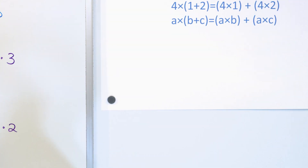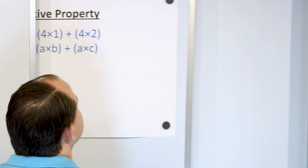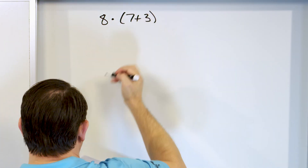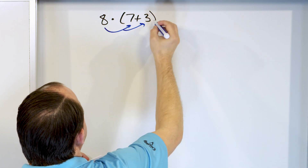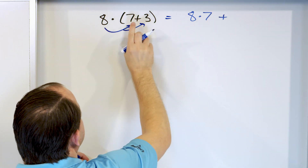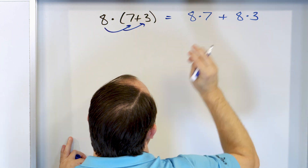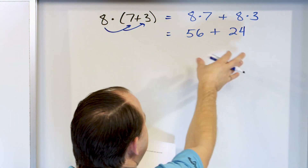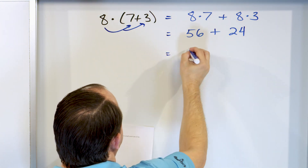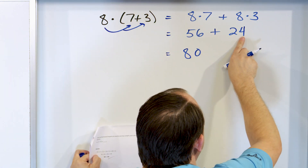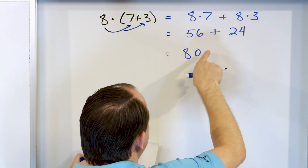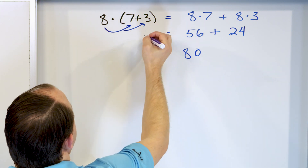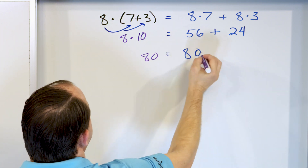Let's take a look at 8 times (7 plus 3). The 8 on the outside gets distributed in times each of the inside terms, so it's 8 times 7, plus 8 times 3. 8 times 7 is 56, and 8 times 3 is 24. Adding those: the 6 and 4 give 10, carry the 1, leaving 80. Checking: 7 plus 3 is 10, and 8 times 10 is 80. That's correct.